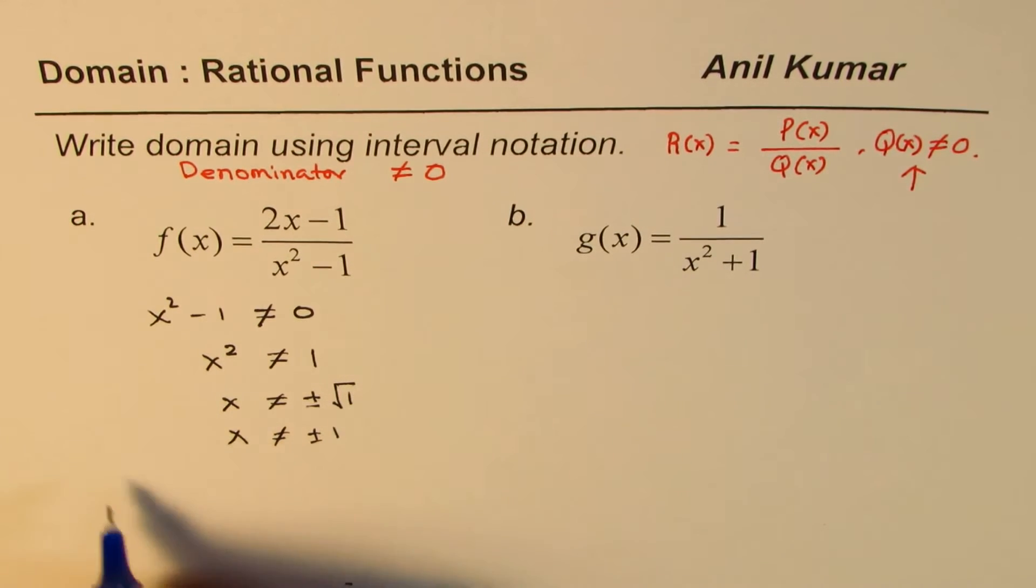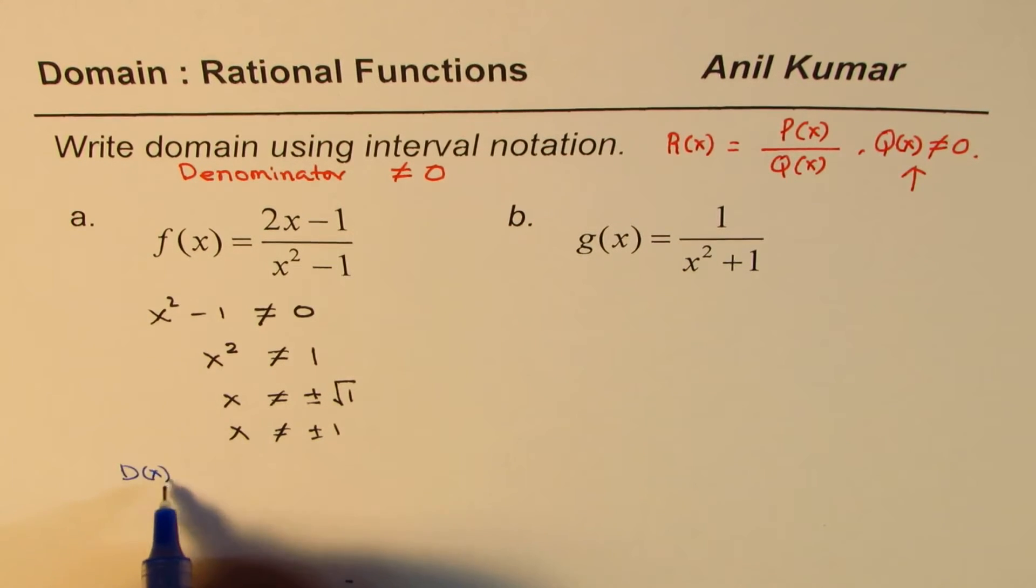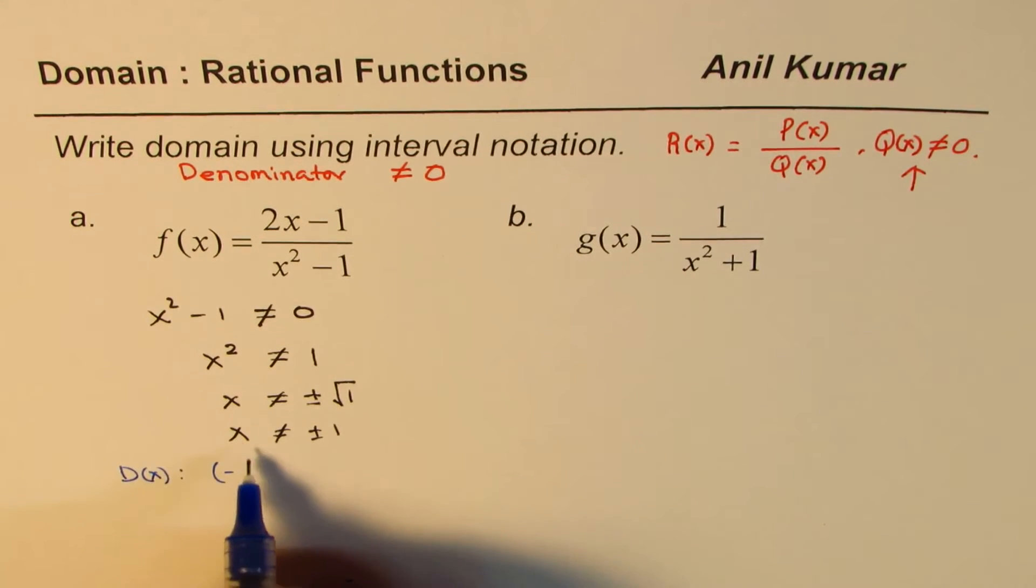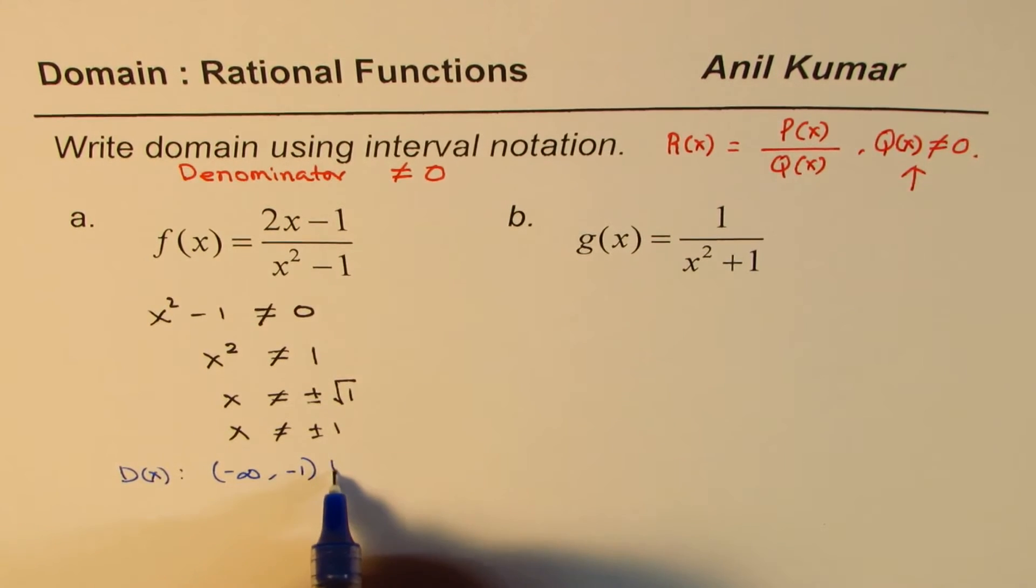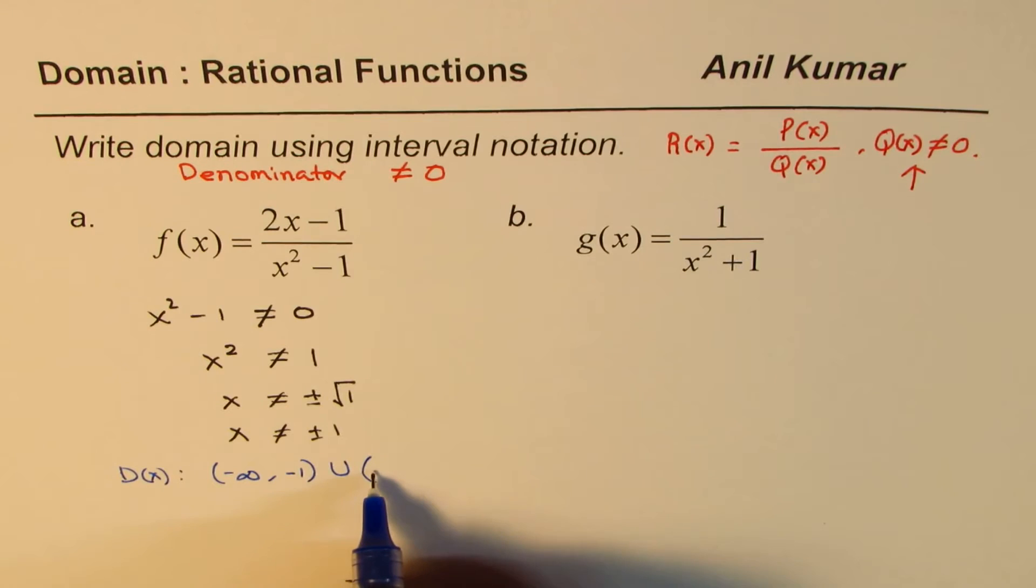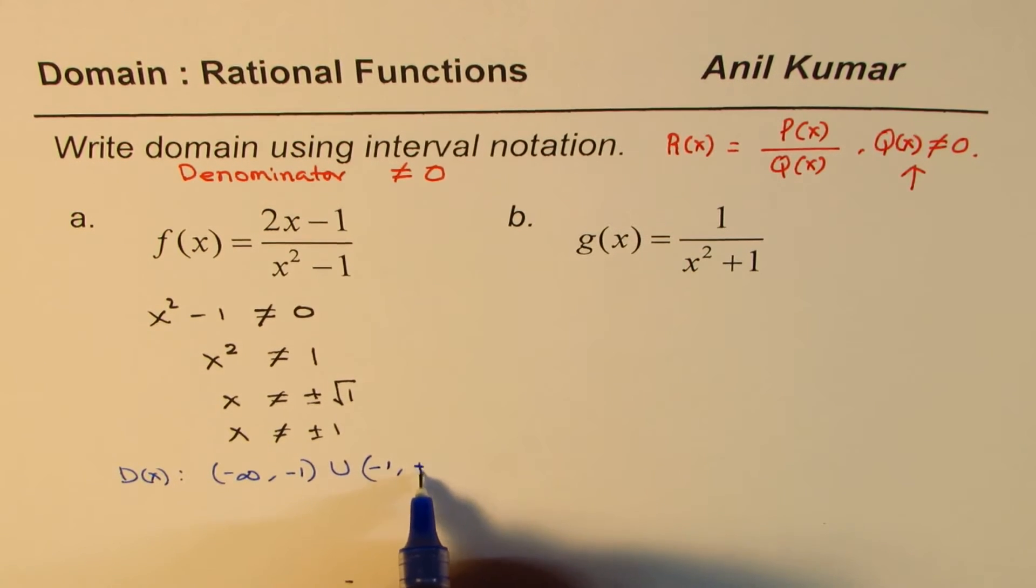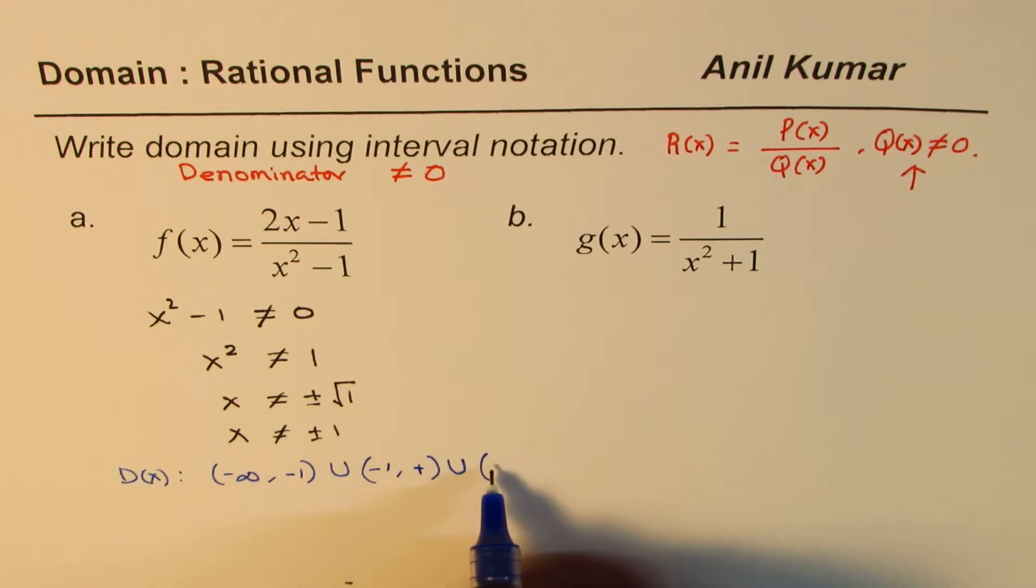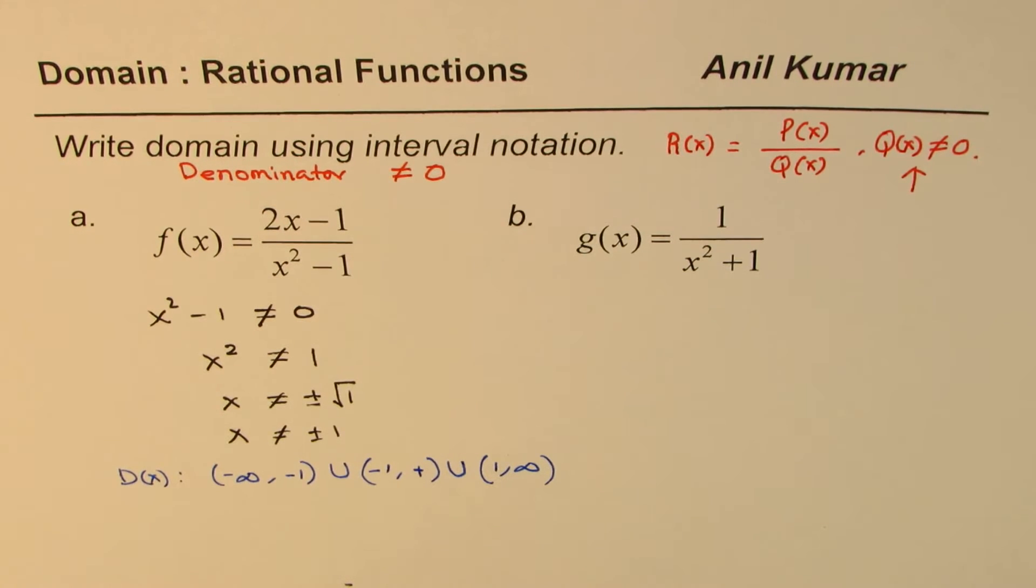So in interval notation, we can write domain of this particular function as all x values from minus infinity to minus 1, union from minus 1 to plus 1, union from 1 to infinity. So that is how you could write this answer. So there are two breaks in between.